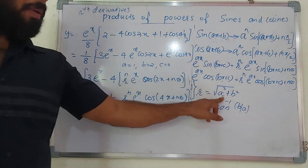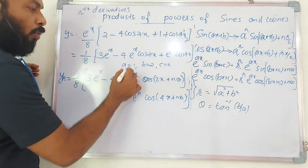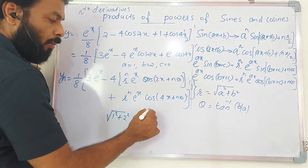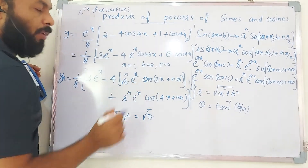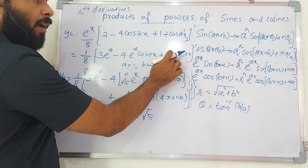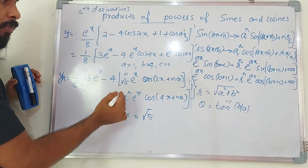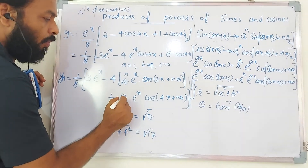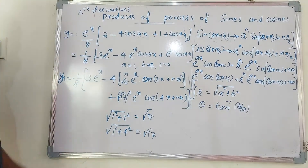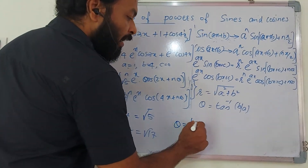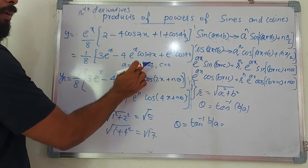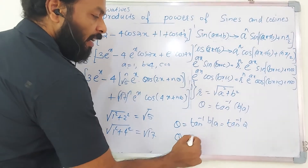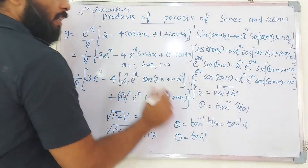For the cos2x term: a = 1, b = 2, so r₁ = √(1² + 2²) = √5, and θ₁ = tan⁻¹(2/1) = tan⁻¹(2). For the cos4x term: a = 1, b = 4, so r₂ = √(1² + 4²) = √17, and θ₂ = tan⁻¹(4/1) = tan⁻¹(4). These values are substituted into the nth derivative formula to complete the solution.